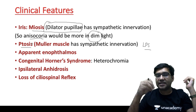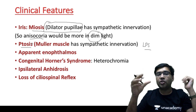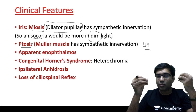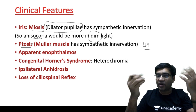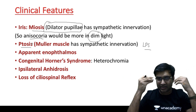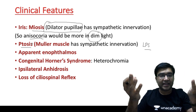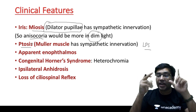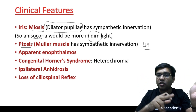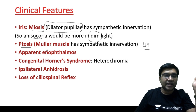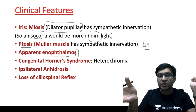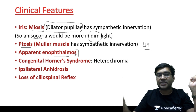Because there is ptosis, there is a feeling of apparent enophthalmos. Apparent enophthalmos means that from a distance it looks like the eyeball is going in — the opposite of proptosis. So there is apparent enophthalmos.